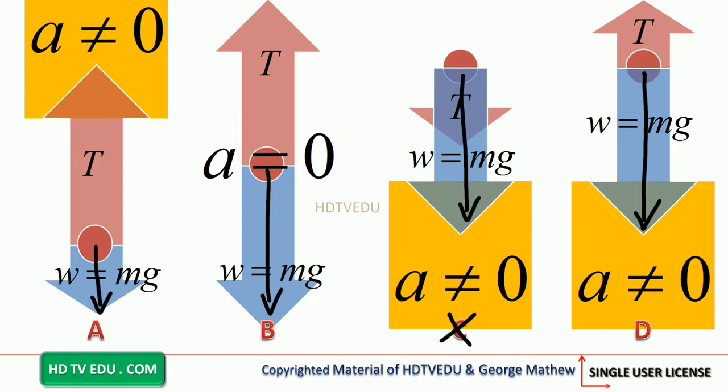In option A, tension is up and gravitational force is down. Whenever an object moves in a circle, there is always a net force — so that rules out option B. In B, forces are equal and opposite, meaning net force is zero, which is impossible for circular motion.